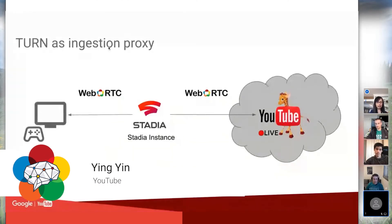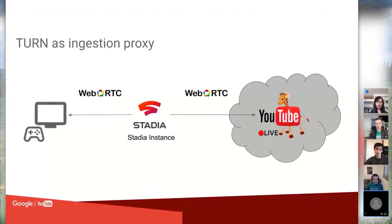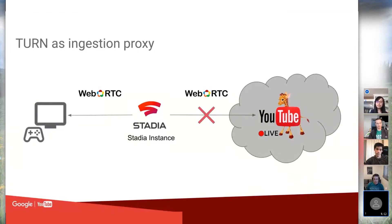For Stadia live stream ingestion, the Stadia instances on the edge network have public IP addresses and always try to form direct peer-to-peer connections with the player client. However, our live ingestion server running in the core data center does not have a public IP address, so it's not publicly accessible. Stadia live streams are also considered external traffic because external game developers control the game code running on the Stadia instance. So the Stadia instance can't form a direct peer-to-peer connection with our ingestion server.